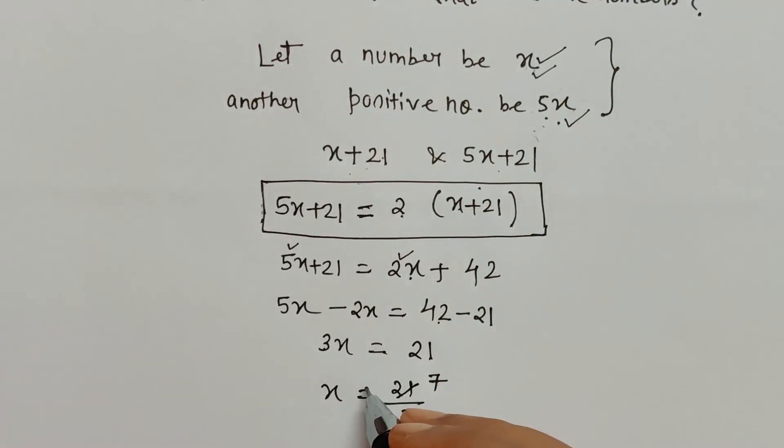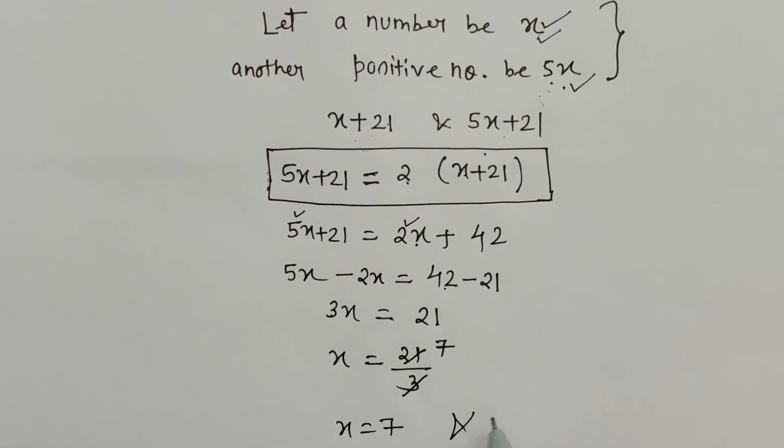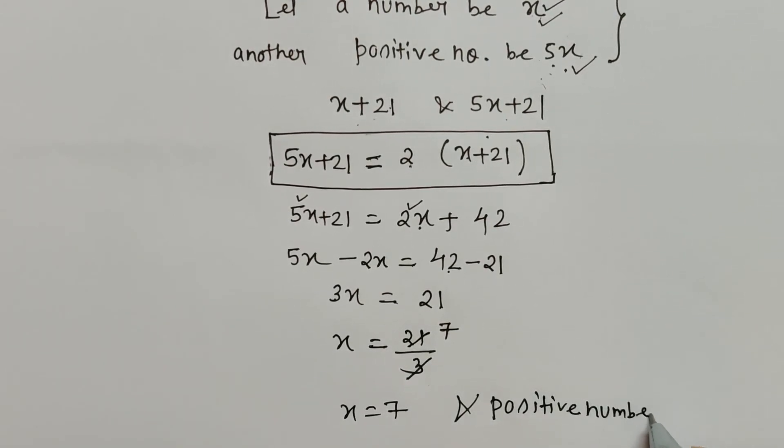x is 7, and the positive number mentioned in the question which is greater in value is 5x, that means 5 into 7.